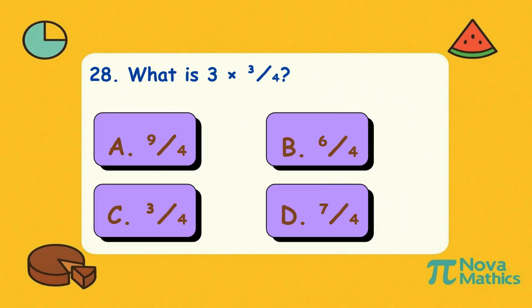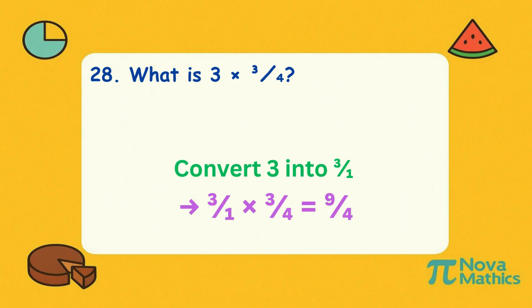Twenty-eight. What is three times three-quarters? Turn three into three-over-one. Multiply top and bottom. That gives nine-fourths.